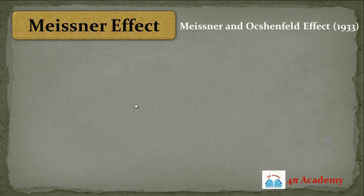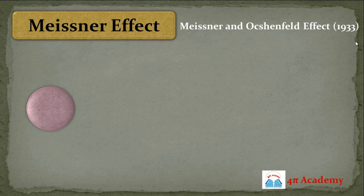So now we will discuss our main topic — today's topic — the Meissner effect. This Meissner effect is also known as the Meissner-Ochsenfeld effect, and this effect was first given in 1933.